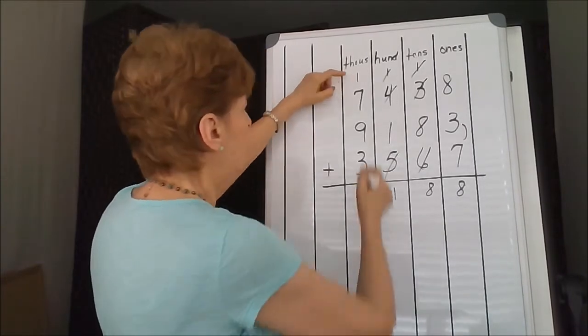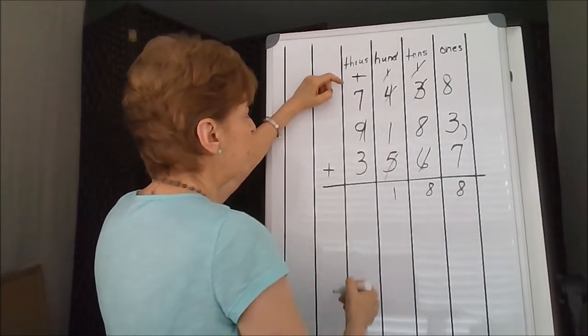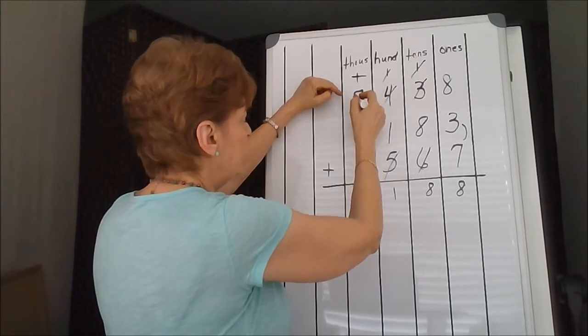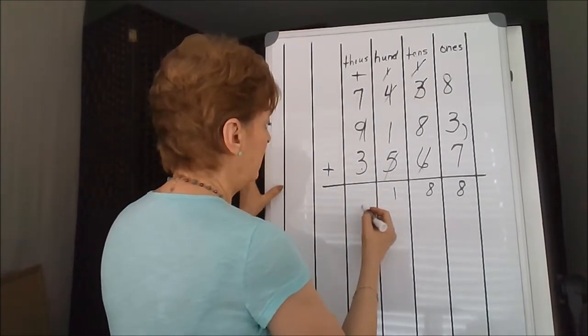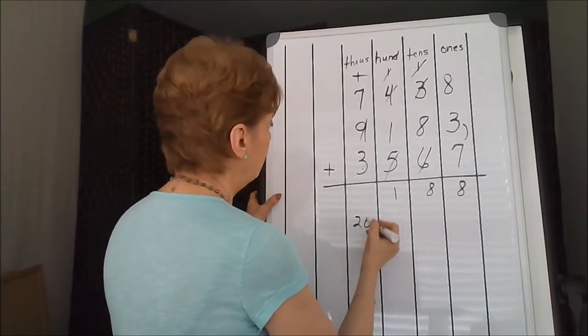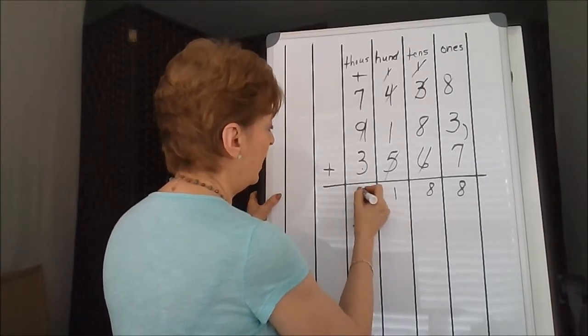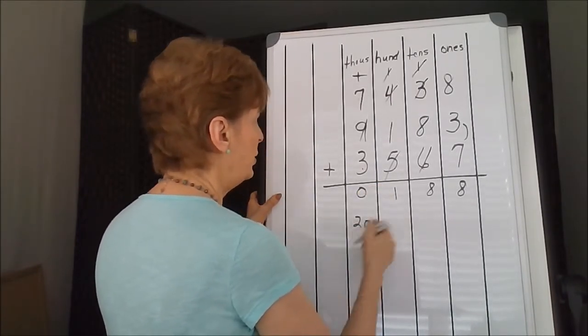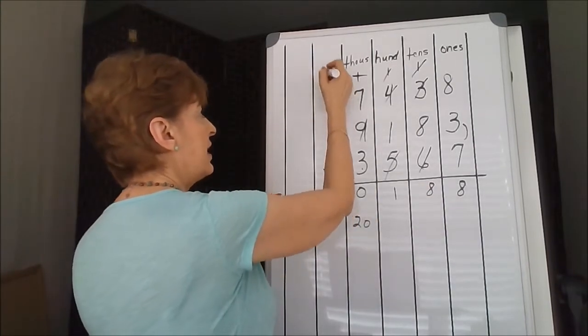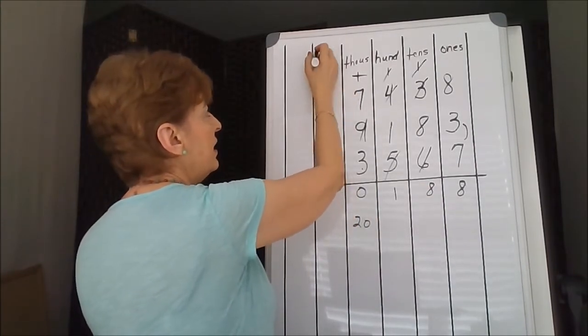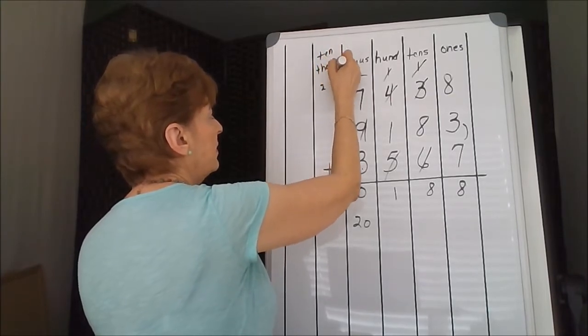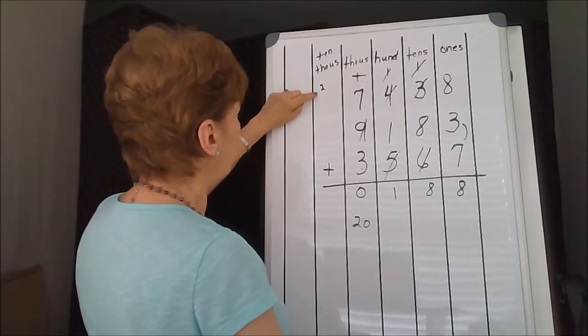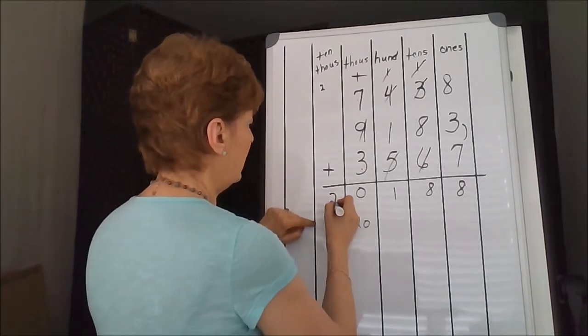Now I have 1 and 9 is 10, and 7 and 3 make 10. So this is 10 and 20. The thousands column takes the 0, and the 2 bumps forward to the next column, which is the ten thousands, and it just drops to the answer.